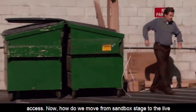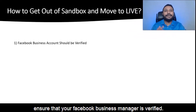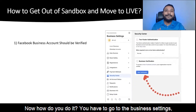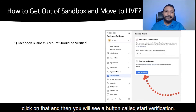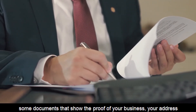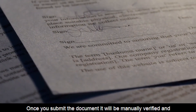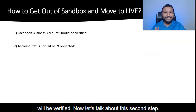How do we move from sandbox stage to the live stage? There are three conditions. Number one: you should ensure that your Facebook Business Manager is verified. How do you do it? Go to Business Settings, under that you will have a tab called Security Center — click on that. Then you will see a button called Start Verification — click on this. They will ask for some documents showing proof of your business, your business address, and some government IDs. Once you submit the documents, they will be manually verified, and if compliant with their rules, your Business Manager will be verified.